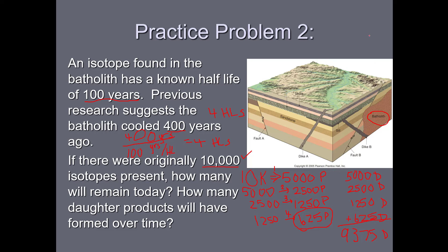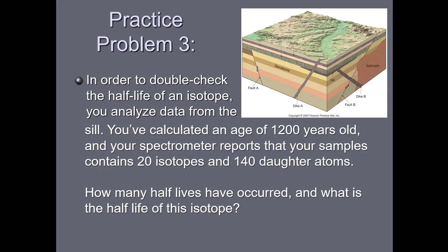One more practice problem: in order to double-check the half-life of an isotope, you analyze data from the sill right here. You have calculated an age of 1200 years old, and your spectrometer — the machine used to measure the number of isotopes and daughter atoms — reports that the sample contains 20 isotopes and 140 daughters. How many half-lives have occurred in that 1200 years, and what is the half-life of this isotope?